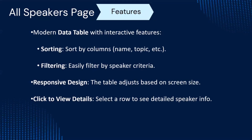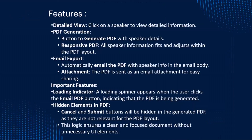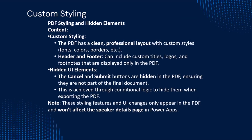Once you click a row, you will be navigated to the detail view, which contains the option to export that particular PDF and send it in mail. That is the detail page where we have the email PDF option and the speaker details. We can also update the details on this page. The PDF is responsive, contains all the information, adjusts within the PDF layout, and on that button click it is exported to the user with all the details, custom styling included.